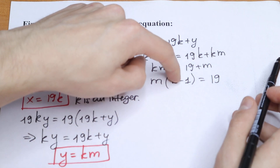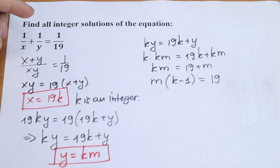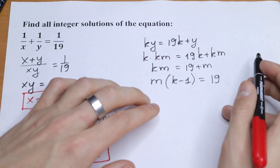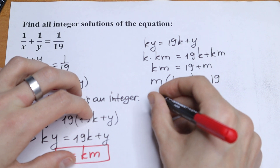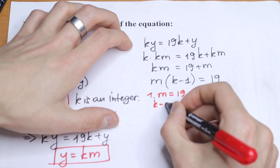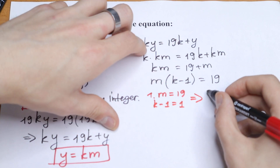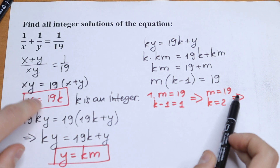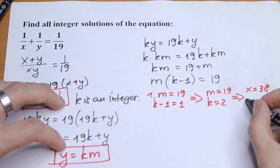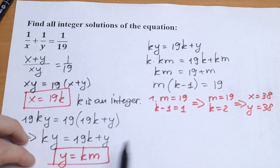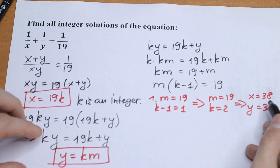We have a product: m times (k minus 1) equal to 19. Since m and k are integers, there are only four possible combinations. The first case: m equal to 19 and k minus 1 equal to 1, giving k equal to 2. Plugging into our substitutions, x equal to 19 times 2 equal to 38 and y equal to km equal to 19 times 2 equal to 38. So our first pair of solutions is (38, 38).